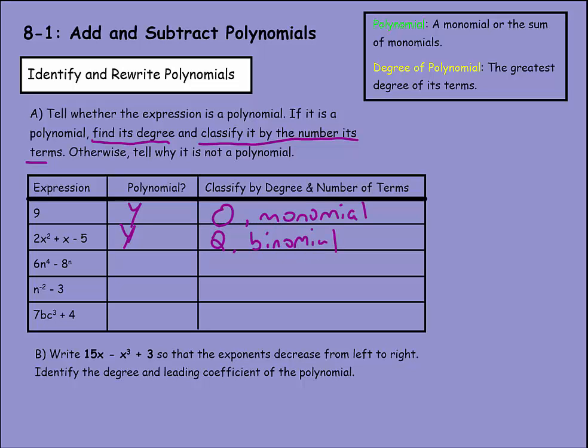Now over here, we have 6n⁴ - 8^n. Remember, that's not a polynomial, because you can't have a variable exponent. We have n^-2 - 3, and that's also not a polynomial, because that negative second exponent will say negative exponent.